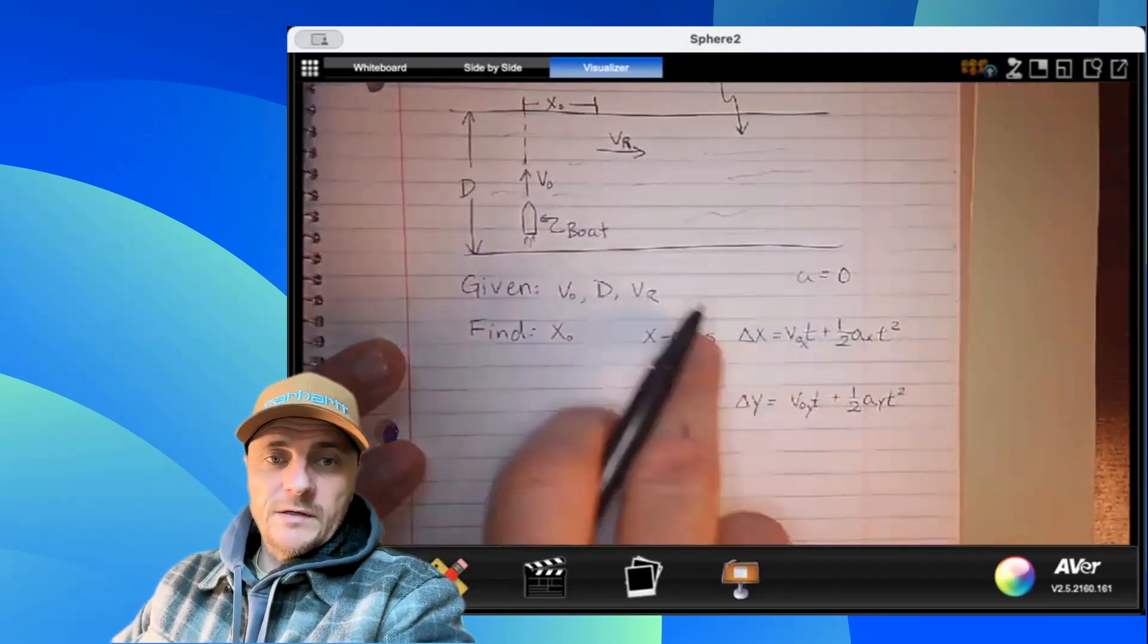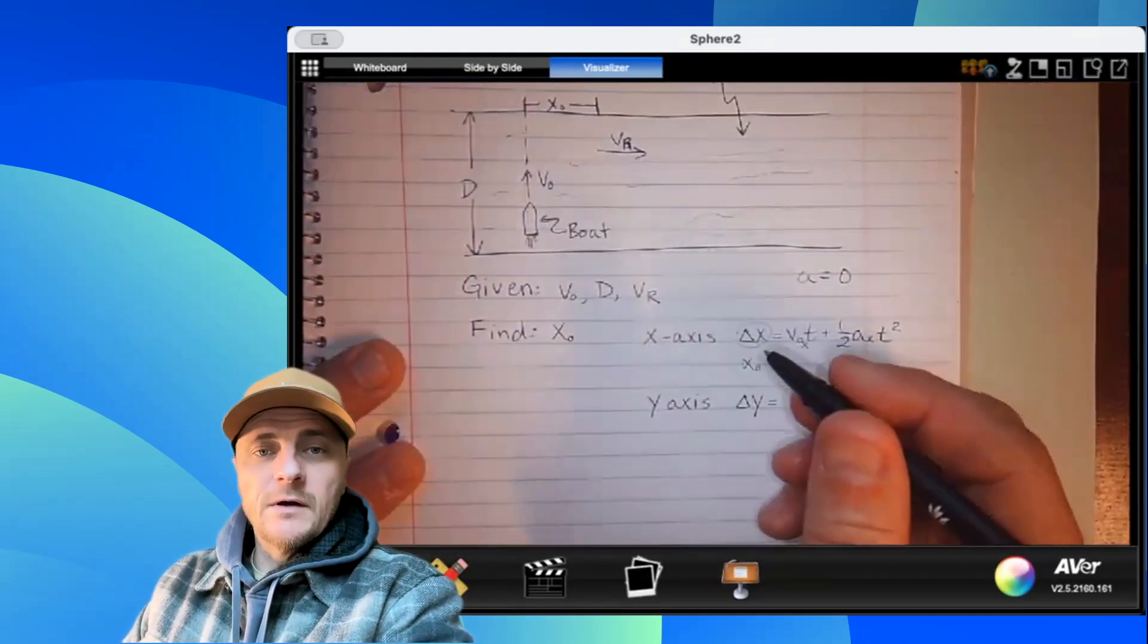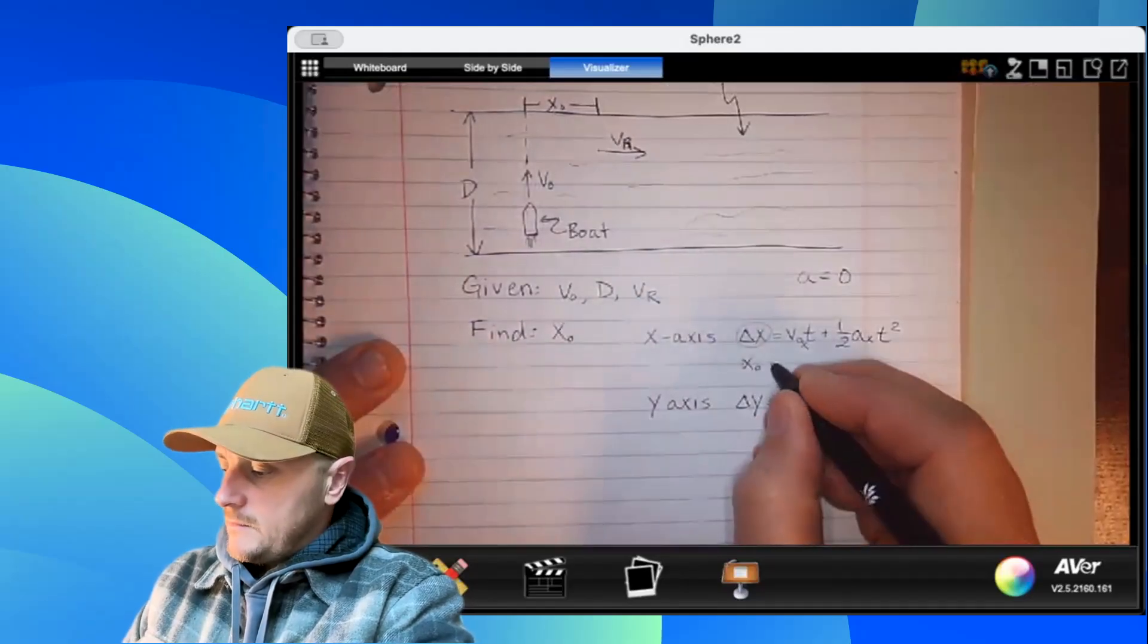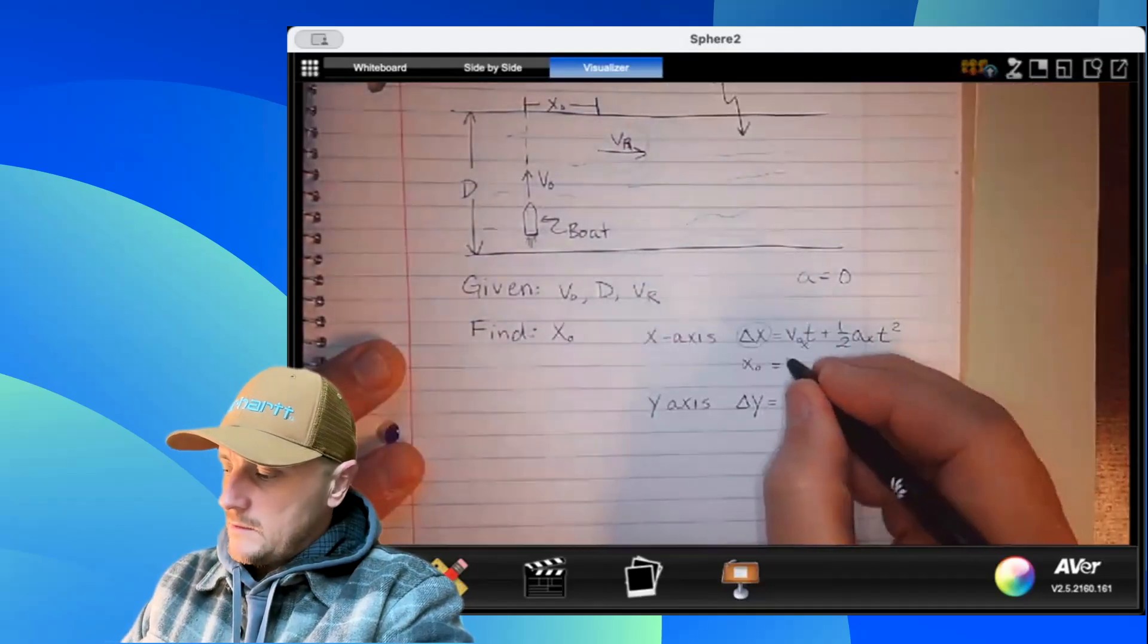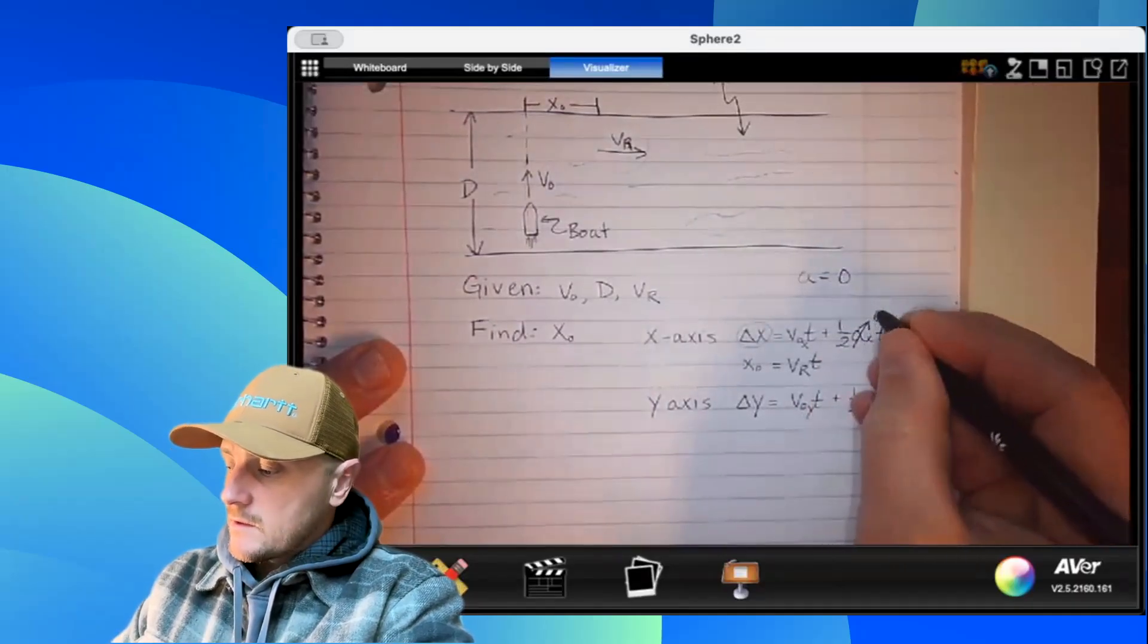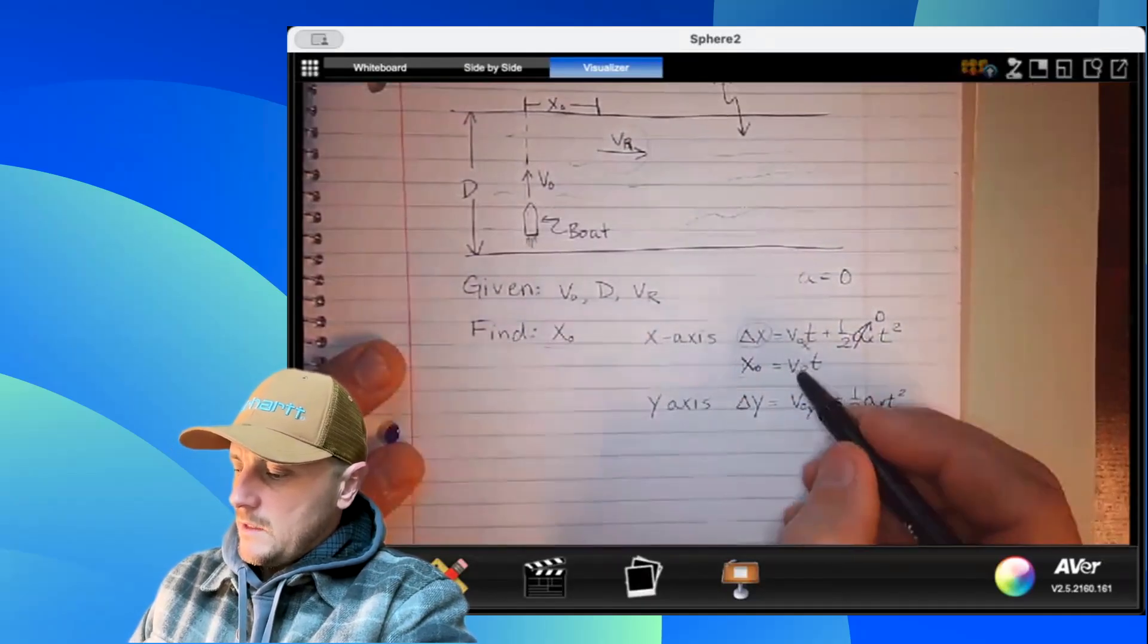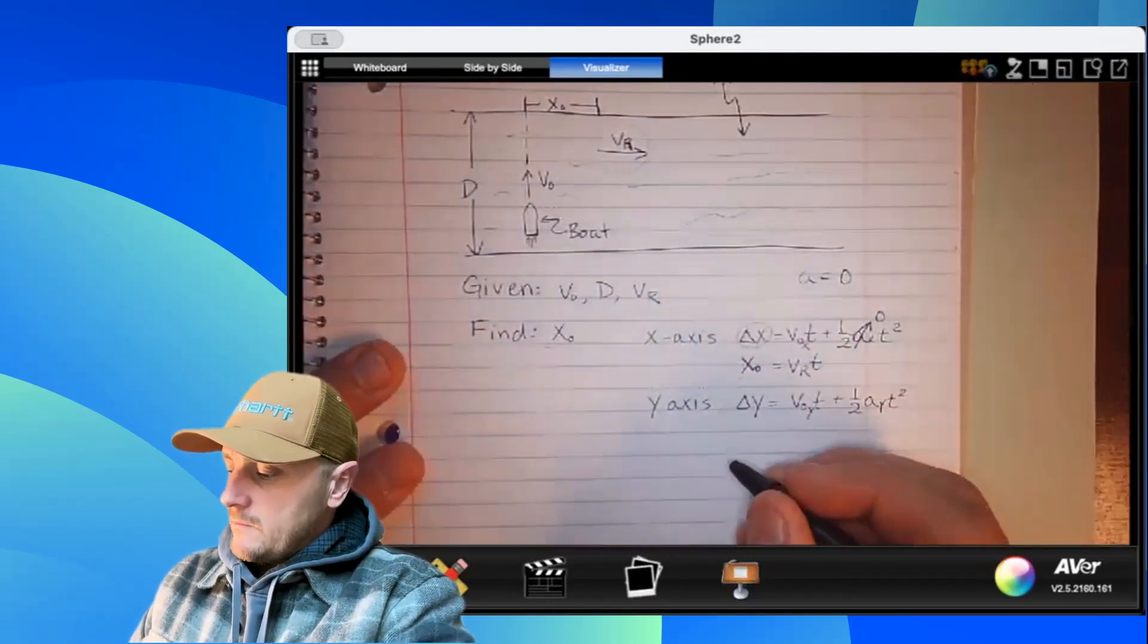All right. Let's personalize these equations for these two independent axes. So x-naught would be inputted for delta x. Our initial x-position is zero. Our final x-position is x-naught. So you could say the entire displacement is x-naught equals my initial velocity in the x-axis is my river velocity times time. Plus, I already stated, these are constant velocities, and therefore, we can cross out acceleration. So there's my first expression. And by the way, it has the term that I'm looking for, and it's already including variables that I'm allowed to use in my answer.